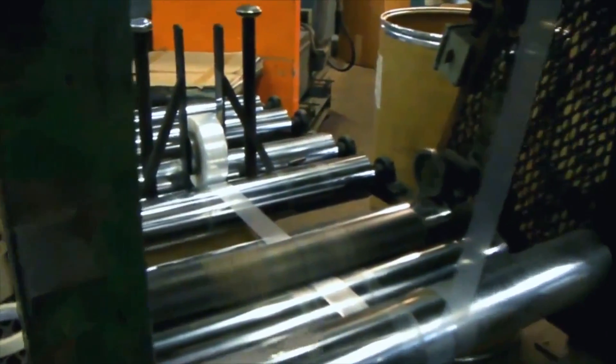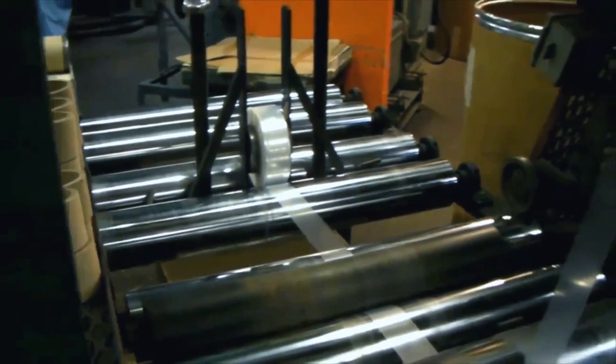Blown film lines are made in different scales to make a variety of widths of lay flat tubing. All blown film starts out as lay flat tubing.